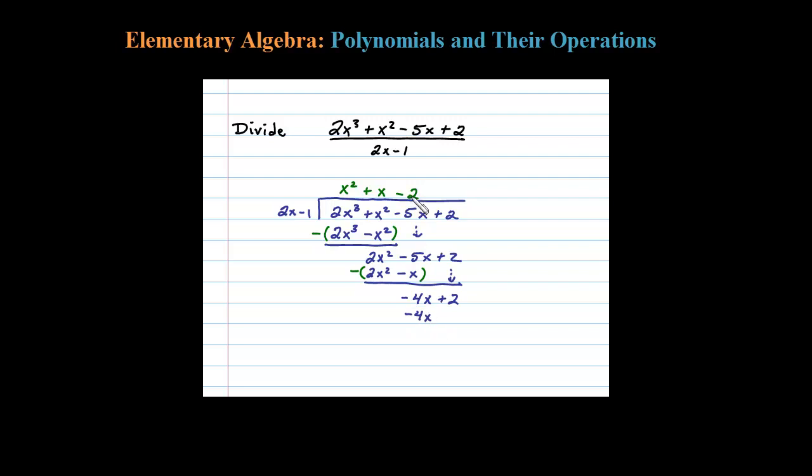And then distributing, negative 2 times negative 1 is plus 2, after which you then subtract. Now here, when I subtract, notice these are exactly the same. So negative 4x plus 4x is 0, and if I were to distribute that negative, I'd have a negative 2 here. So positive 2 minus 2 is 0.